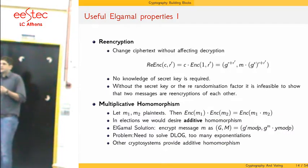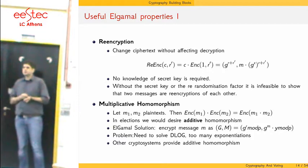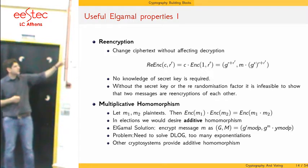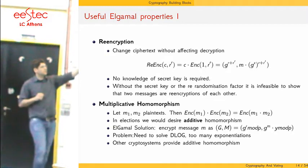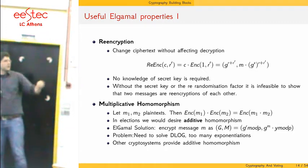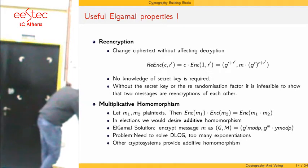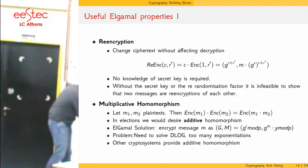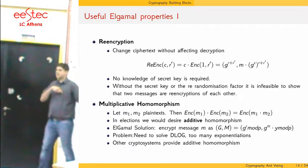We cannot tell if two messages are encryptions of each other without knowing the randomness used or the private key. Another very important property of ElGamal is that it is multiplicatively homomorphic, meaning the product of two encryptions is equal to the encryption of the product of the two messages. Furthermore, raising the encryption of a message to a power k is equivalent to encrypting the message raised to that power k.